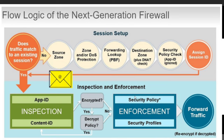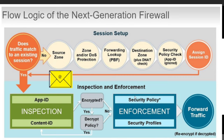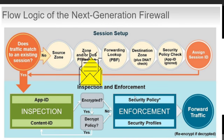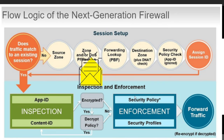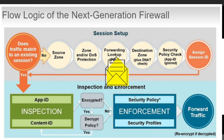By default, Palo Alto firewall provides the untrust, trust, and DMZ zones. The untrust zone connects to external networks, the trust zone connects to internal networks, and the DMZ zone is for servers like web servers and other externally accessible servers. The second step in session setup is zone protection or DoS protection. If a protection profile is configured, the firewall checks the specified traffic threshold, and if there is a match, it discards the packet.